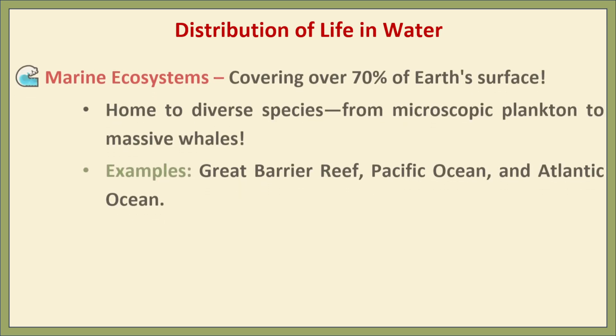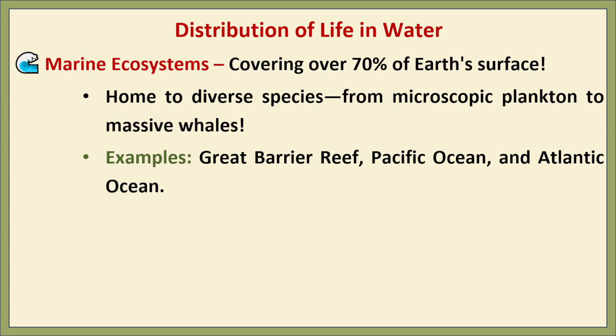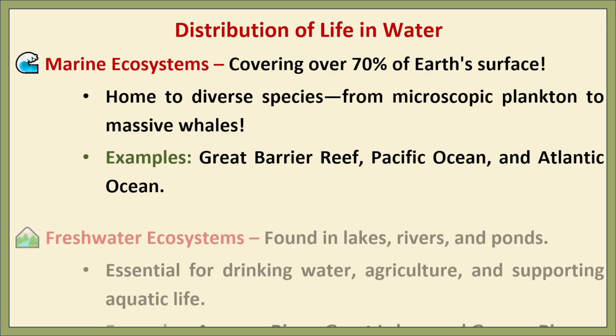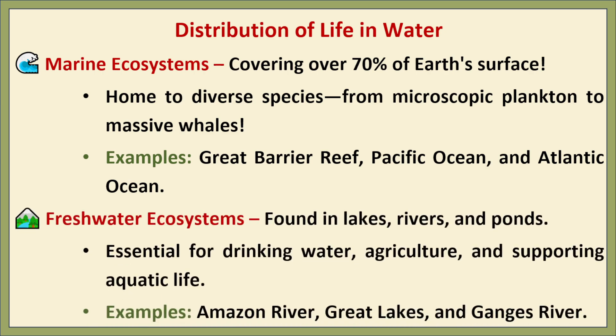Water covers over 70% of Earth's surface, making aquatic ecosystems crucial for life. Marine ecosystems include oceans, seas, and coral reefs — home to a vast range of species from tiny plankton to massive whales. Examples include the Great Barrier Reef, Pacific Ocean, and Atlantic Ocean. Freshwater ecosystems found in lakes, rivers, and ponds are vital for drinking water, agriculture, and aquatic life — examples include the Amazon River, Great Lakes, and Ganges River.